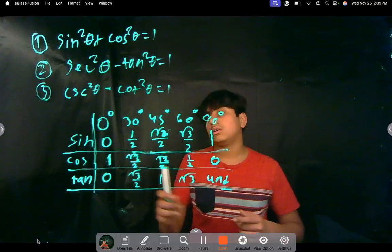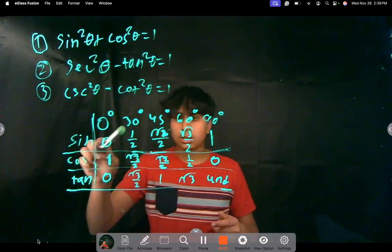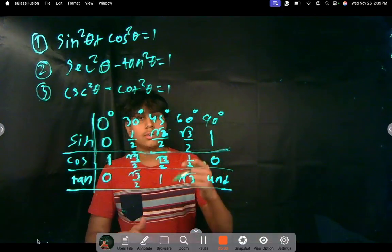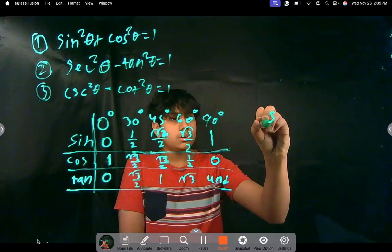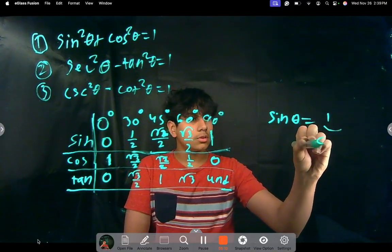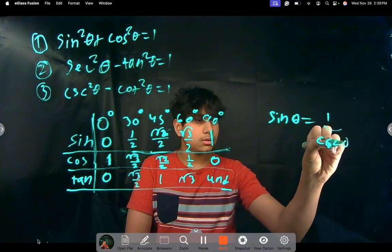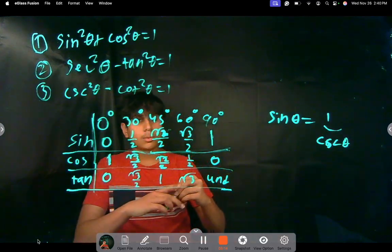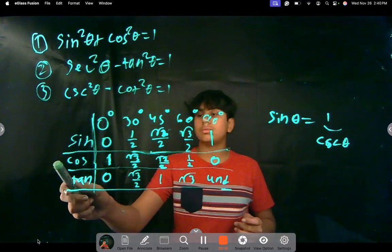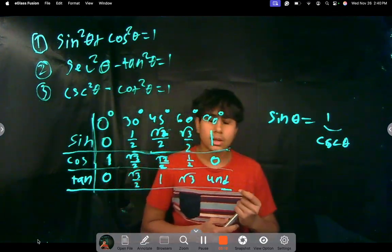Because sine theta equals 1 over cosecant theta. That's what you have to remember. That applies for all of them. This one is for secant and this one is for cotangent. It's the same thing.